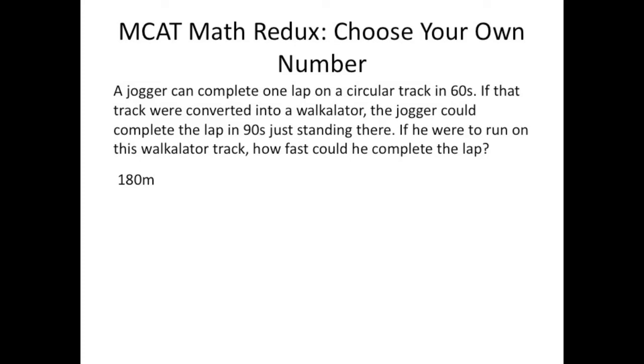Now that we have a distance, we can figure out how fast the jogger is going in each case, which would be 3 meters per second jogging on the normal track, and 2 meters per second standing on the walk-a-later. Combining these cases, which is what the question ultimately requires us to do, yields 5 meters per second jogging on the walk-a-later, which is still 180 meters. And at that speed, he would finish a lap in 36 seconds. So, that's choose your own number.